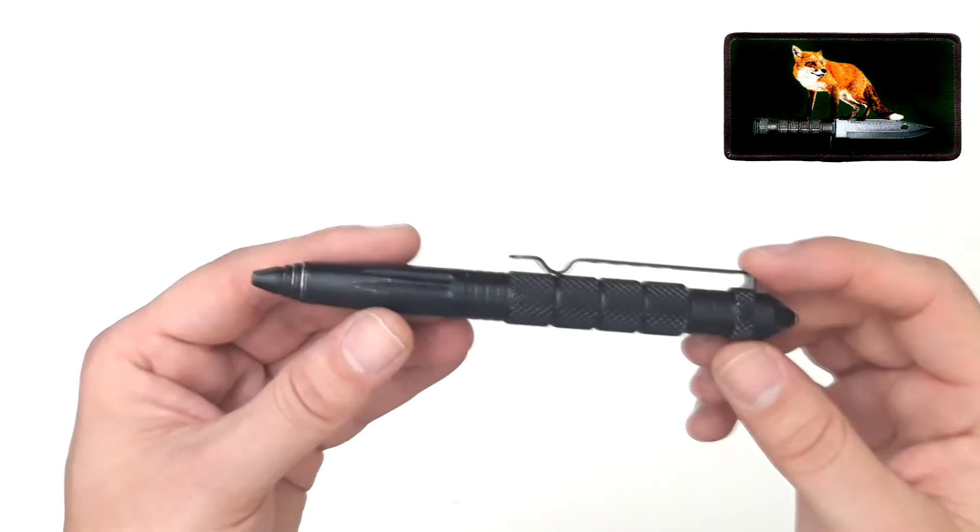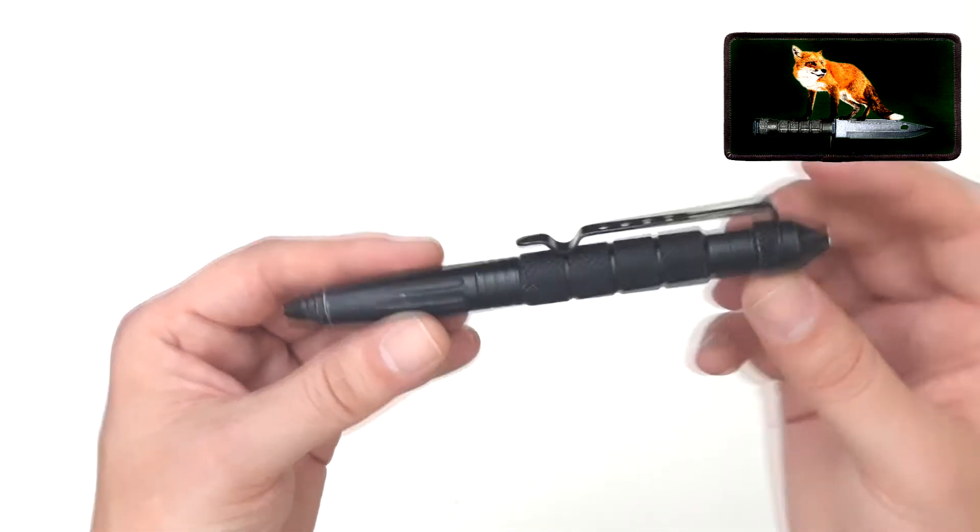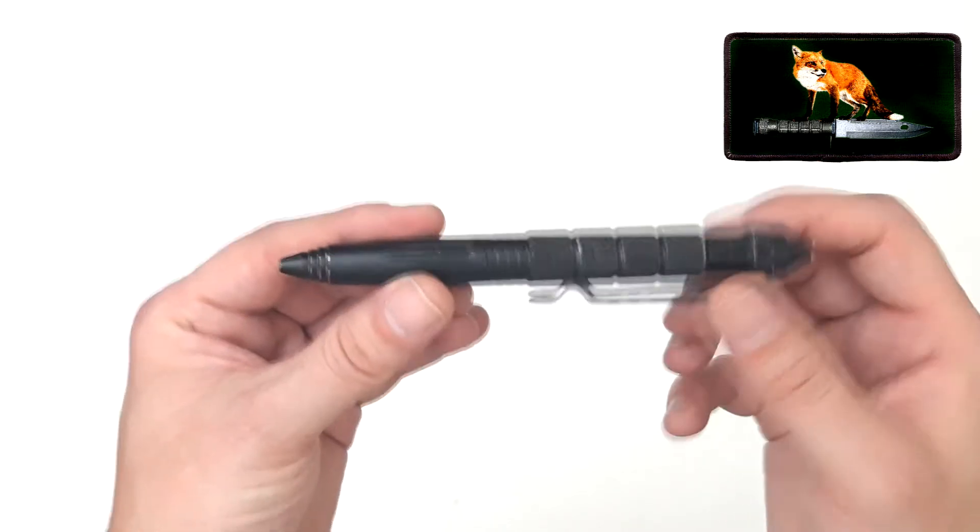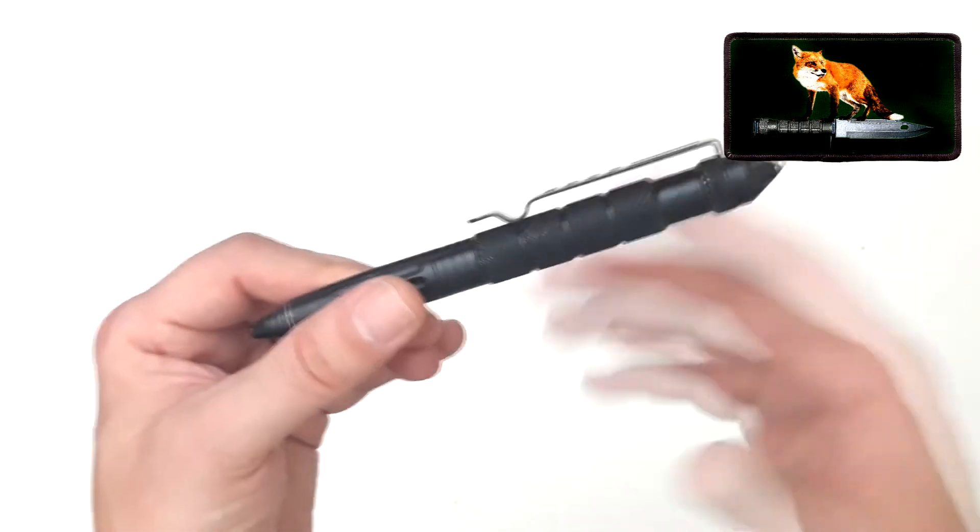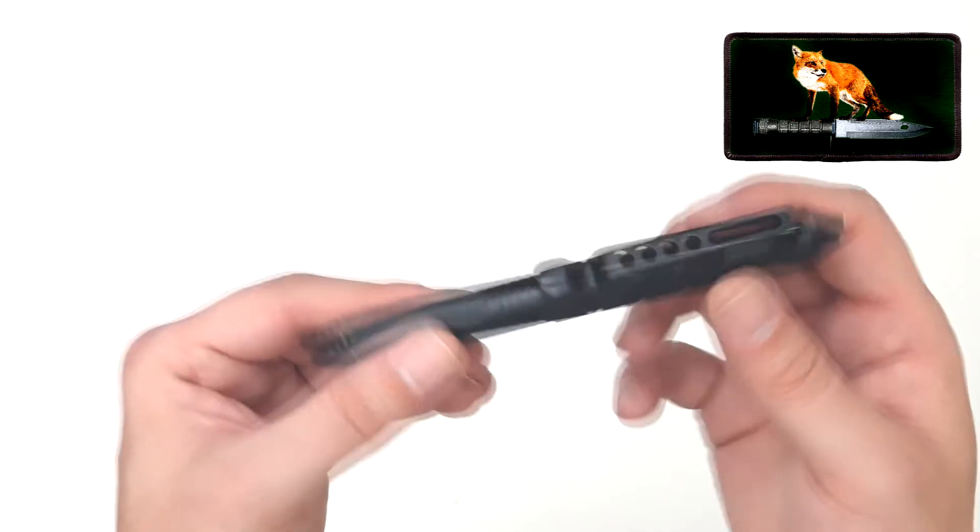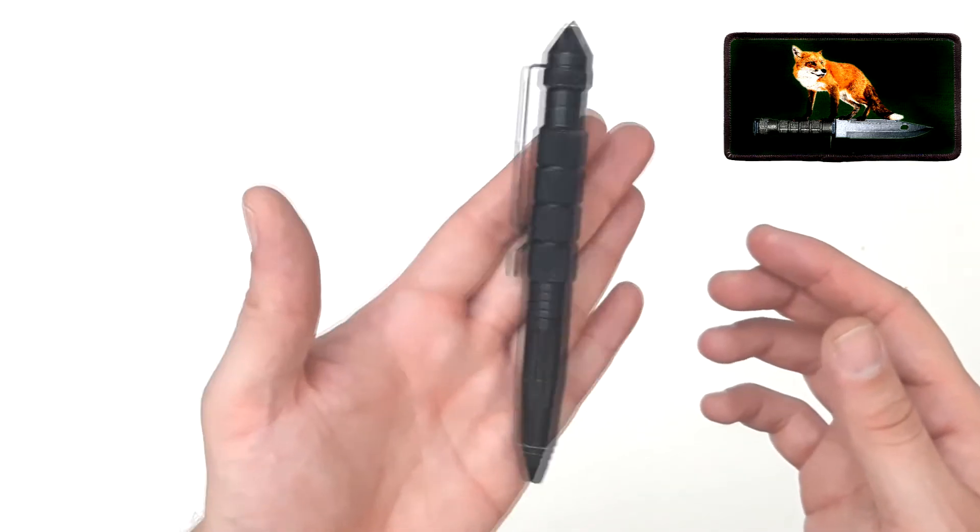Right guys, welcome back to my channel. Today we're going to be talking about this tactical pen. It's also known as a safety pen or self-defense pen, and it's made out of very dense metal.